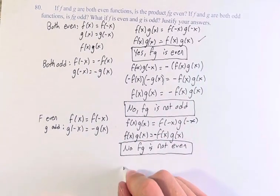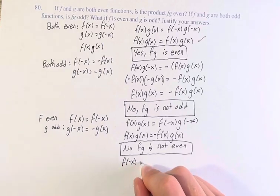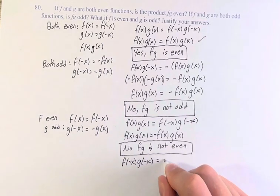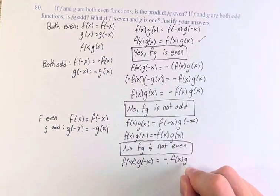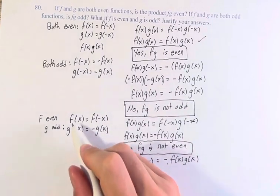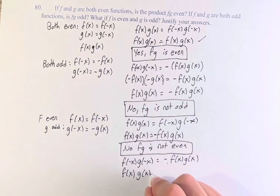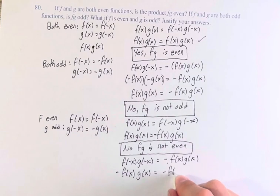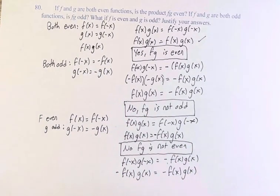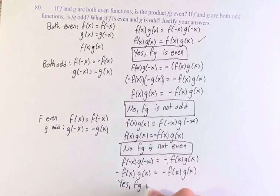Is it odd? Is f of negative x times g of negative x equal to negative f of x times g of x? f of negative x is equal to f of x, and g of negative x is equal to negative g of x. Writing the negative out front, this shows us that negative f of x times g of x is equal to negative f of x times g of x. Therefore, yes, fg is odd.